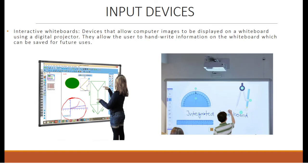The last input device is the interactive whiteboard — a device that allows computer images to be displayed on a whiteboard using a digital projector. They allow the user to handwrite information on the whiteboard, which can be saved for future use. We mostly see these in classrooms and meeting areas. That's it for input devices. The second part of this chapter, covering output devices, will be posted shortly — check the description box for the link to the next video.